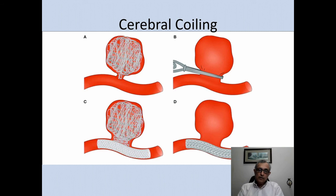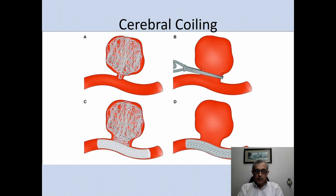To complete the discussion, cerebral coiling: if you have a blood vessel with an aneurysm that can bleed and cause significant morbidity and mortality, the conventional way was to clip it. Now, coils are increasingly used to block off aneurysms. When the neck is wide, stents are placed through which coils are deployed, or flow diverters are used to isolate the aneurysm with reduced morbidity and mortality.